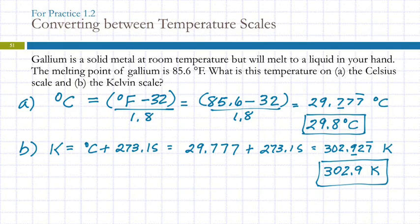Student question: Is there a way to go straight from Fahrenheit to Kelvin? I'm not aware of an equation that goes directly from Fahrenheit to Kelvin. You could derive one by combining the two equations, but it doesn't seem worth the effort. We mostly do Celsius to Kelvin and Kelvin to Celsius conversions.